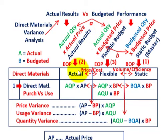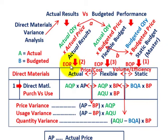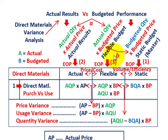For our direct materials variances, we're first going to look at a static or master budget — a standard amount that we plan at the beginning of the period. Then at the end of the period, we have some actual results, and we're going to compare those actual results to a flexible budget that we'll set up.